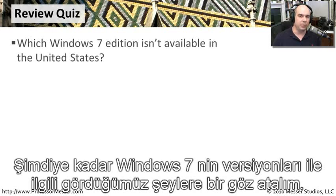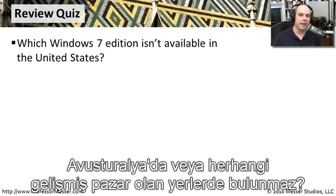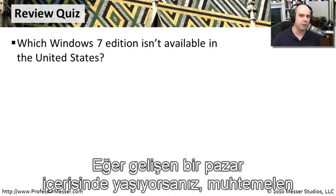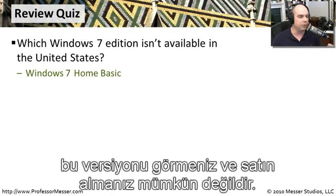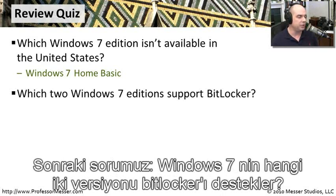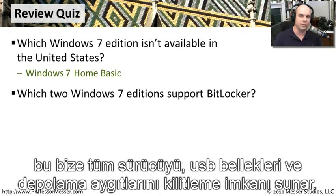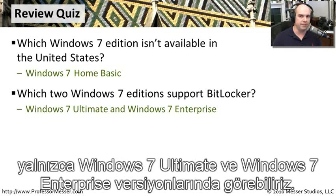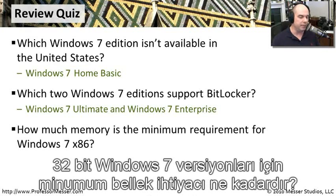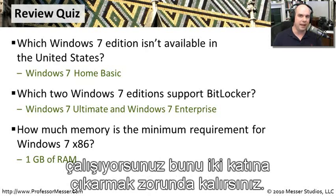Let's review. First: which Windows 7 edition is not available in the United States, UK, Australia, or other non-emerging markets? That's Windows 7 Home Basic — only available in emerging markets. Second: which two editions support BitLocker? BitLocker is an enterprise feature for encrypting drives and USB storage, found only in Windows 7 Ultimate and Windows 7 Enterprise. Third: the minimum RAM for a 32-bit Windows 7 system is 1 GB; for 64-bit, you need 2 GB.